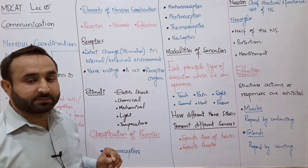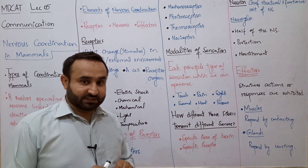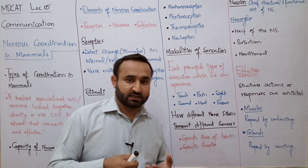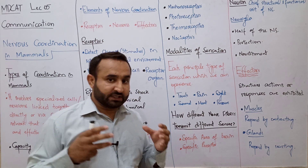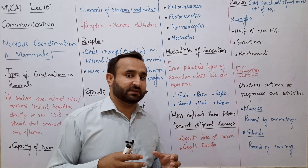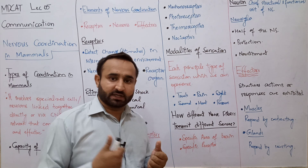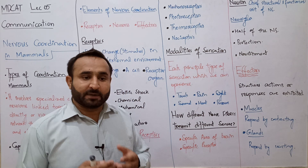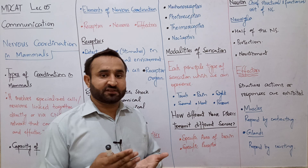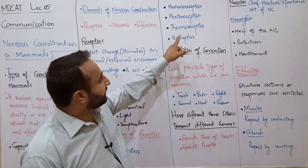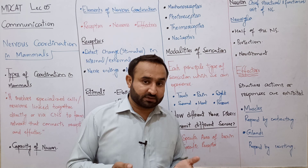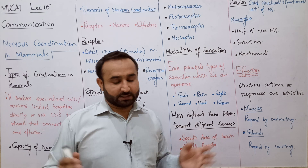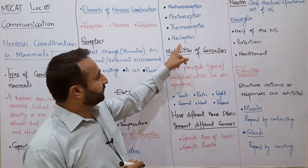Mechanoreceptors جو mechanical stimulus کو receive کرتے ہیں — جیسے touch اور pressure۔ Ear کے اندر auditory nerve اور cochlea vibrations کو receive کرتی ہے — یہ بھی ایک mechanoreceptor ہے۔ Photoreceptors جو light کی presence کو detect کرتے ہیں: آنکھ میں rod cells dim light کے لیے اور cone cells bright light کے لیے ہیں۔ Thermoreceptors — heat اور cold کو detect کرتے ہیں — skin میں heat receptors اور cold receptors موجود ہیں۔